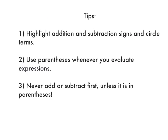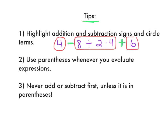A couple of tips when doing order of operations or evaluating expressions. First tip: highlight addition and subtraction signs and circle terms. For example, I see a subtraction sign — highlight it; addition sign — highlight it. Then circle your terms. Then you do each of those things following the order of operations inside each term, get your answer, and go from left to right.